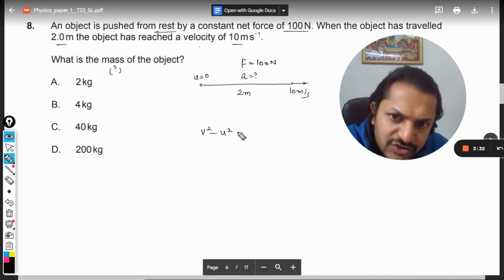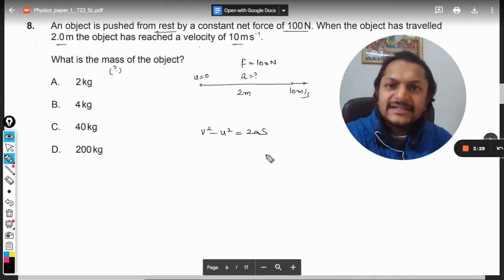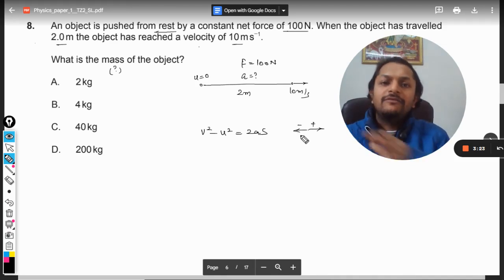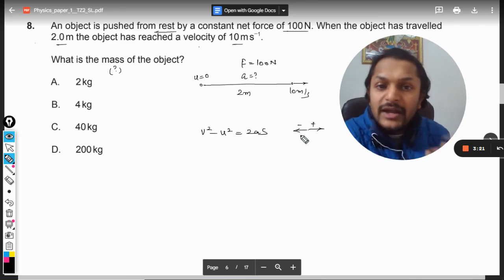v² - u² = 2as. I'm going to apply this. One direction has to be taken as positive, another to be taken as negative. Now everything is moving towards right, so right direction has been chosen as positive.